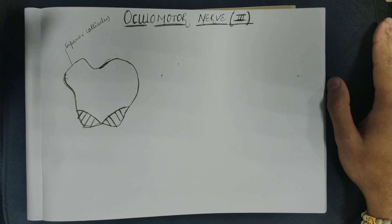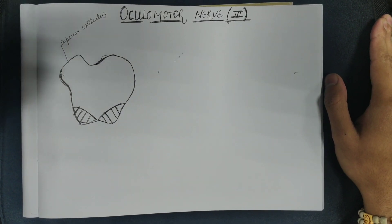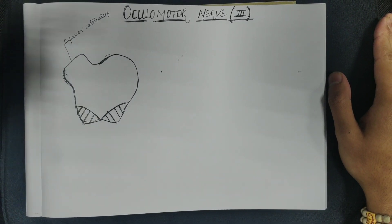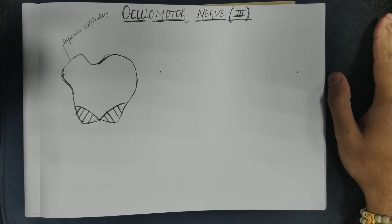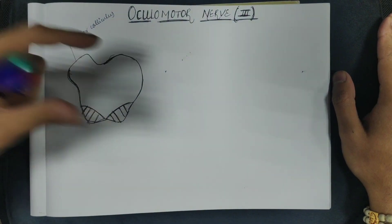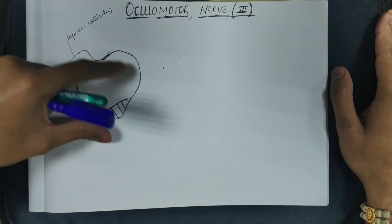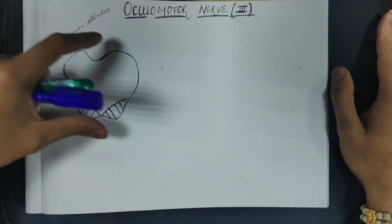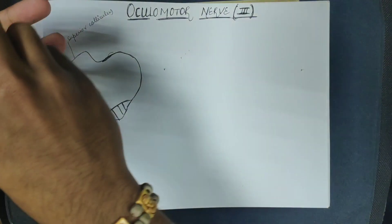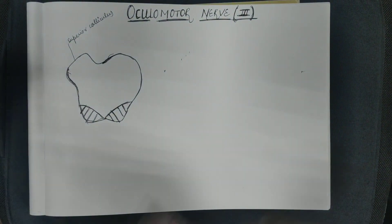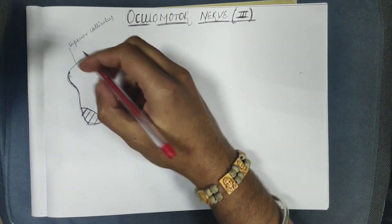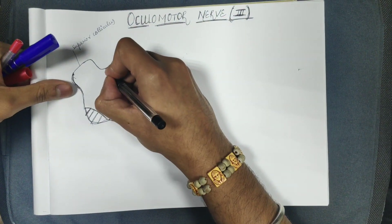In the previous video we discussed the motor and parasympathetic nucleus of the oculomotor nerve at the level of the brainstem in the midbrain. Here we have taken a part of the superior colliculus, which is the midbrain level where the motor and parasympathetic nuclei are present. In the superior colliculus we have three nuclei: two parasympathetic and one motor.